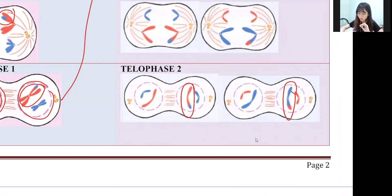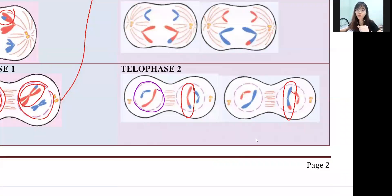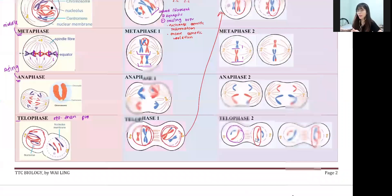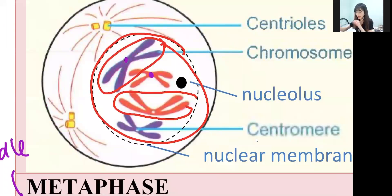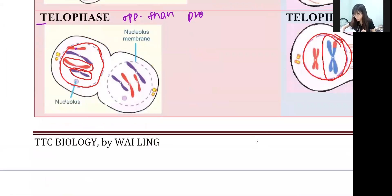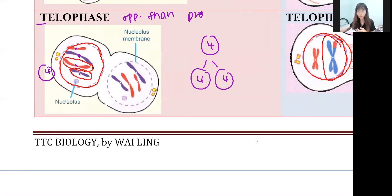The most common question is: Teacher, this one is only one color - how is it meiosis? For that case, we base it on the number of chromosomes. How to calculate the number of chromosomes? You can count by counting the centromere - the one in the middle is the centromere. You can use this method in 95% of questions. For mitosis, count the centromeres: one, two, three, four - four chromosomes. Look at telophase: one, two, three, four - also four. So parent cell has four, and daughter cells also have four and four.